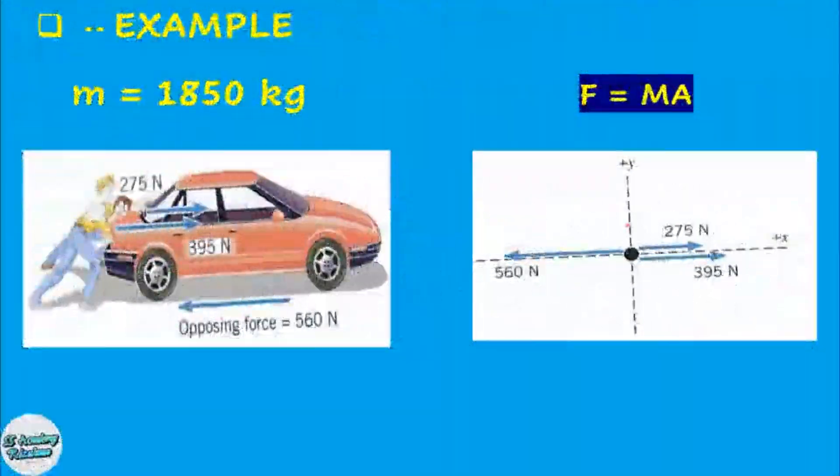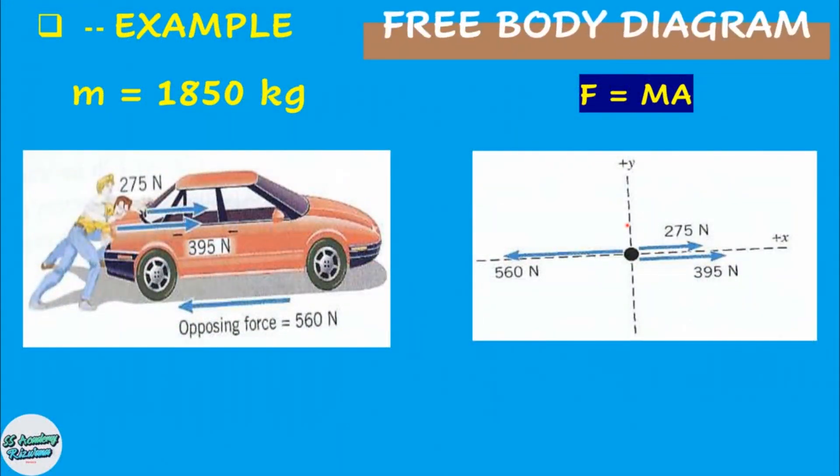Now when using the second law to calculate the acceleration, it is necessary to determine the net force that acts on the object. In this determination, a free body diagram helps enormously. A free body diagram is a diagram that represents the object and the forces that act on it. Only the forces that act on the object appear in a free body diagram. Forces that the object exerts on the environment are not included.